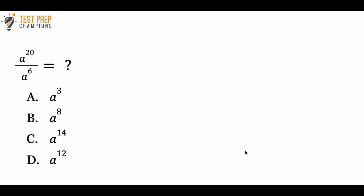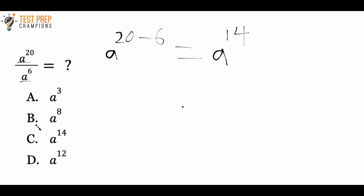A raised to the 20th power divided by A raised to the 6th power — is the answer A, B, C, or D? There's an exponent rule we need here: whenever you have a base raised to an exponent divided by the same base raised to an exponent, you can rewrite it as A to the 20 minus 6. Since we've got A to the 20 divided by A to the 6th and they have the same base, we get A to the 20 minus 6. And 20 minus 6 is 14, so the correct answer is C.